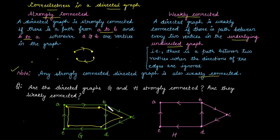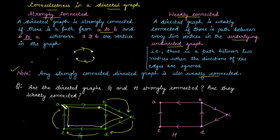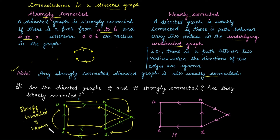For example, suppose you start from vertex D and want to reach vertex A. From D you can go to E, then E to A. There also exists a path from B to A: B → C → D → E → A. Similarly, there is a path from A to B — a single edge, so a path of length 1. This confirms the graph is strongly connected, and since every strongly connected graph is weakly connected, this graph is also weakly connected.